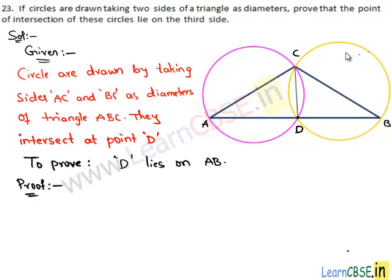Now consider the triangle with diameter BC. We form a triangle BDC. The angle it forms in the semicircle of this circle is a right angle, since any angle in a semicircle is a right angle. Therefore, angle BDC equals 90 degrees.